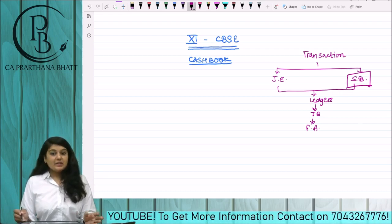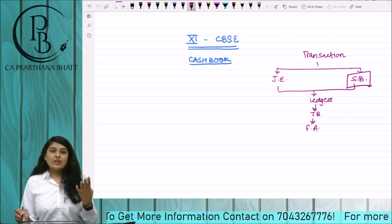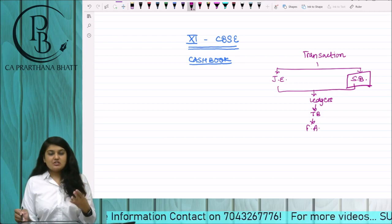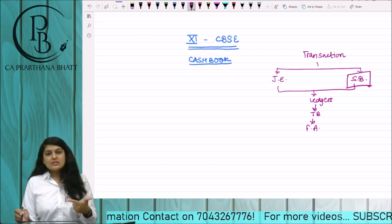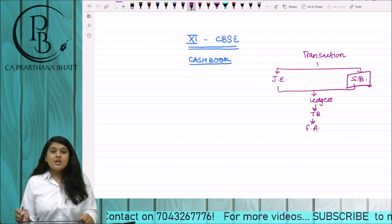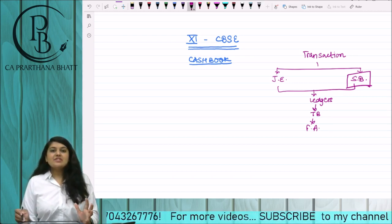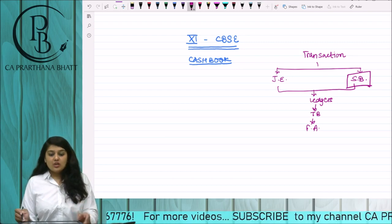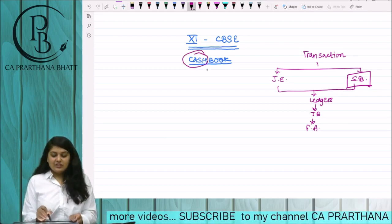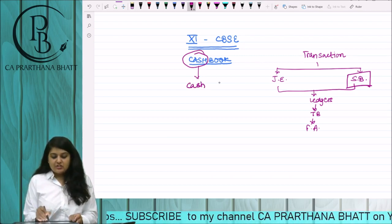There are many types of subsidiary books — mainly eight types. Four are of goods: purchase book, purchase return, sales book, sales return book, bills receivables, bills payable, cash book, and journal proper. When I talk about cashbook, the name itself suggests cash book. What we are supposed to do is look at the transactions related to cash — I can say cash transactions.